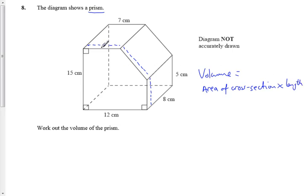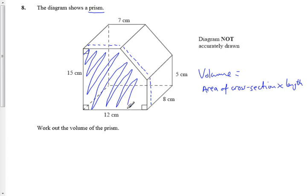So the volume of any prism is the area on the end, which I'm kind of shading in now, is that area on the end, times by the 8, because it goes 8 back. So the trick is to find out what the area of the shape is on the end.